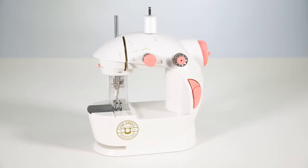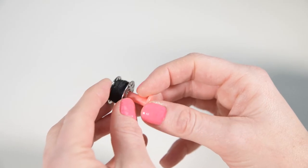Pull the spool and empty bobbin out towards you and place a pre-wound bobbin onto the holder with the thread direction facing under.